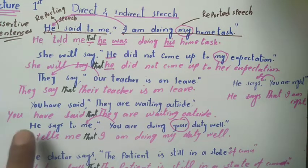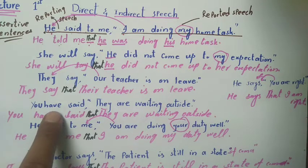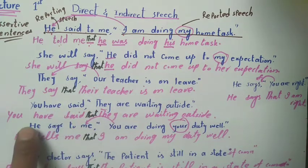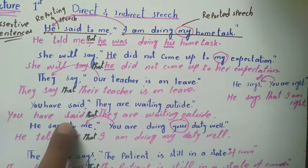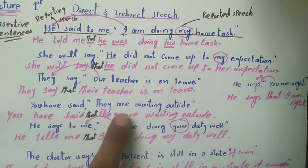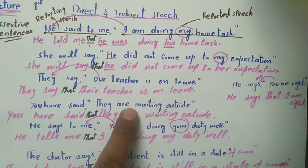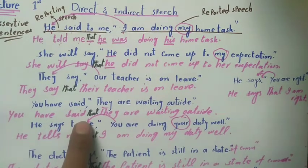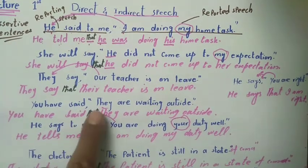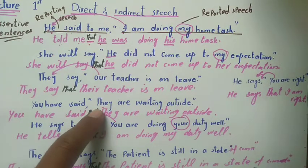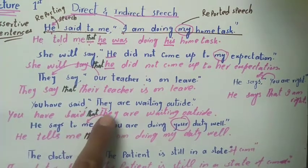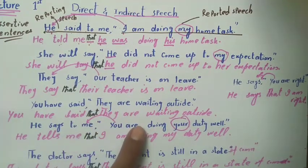Next example: 'You have said, they are waiting outside.' The indirect sentence is: 'You have said that they are waiting outside.'